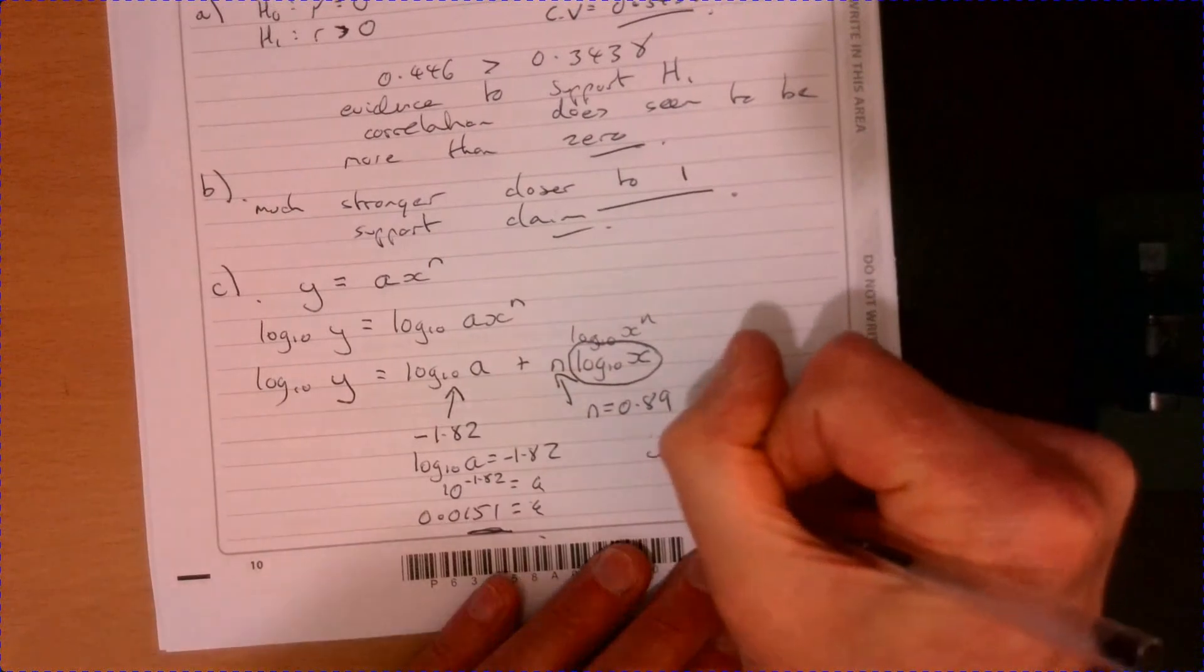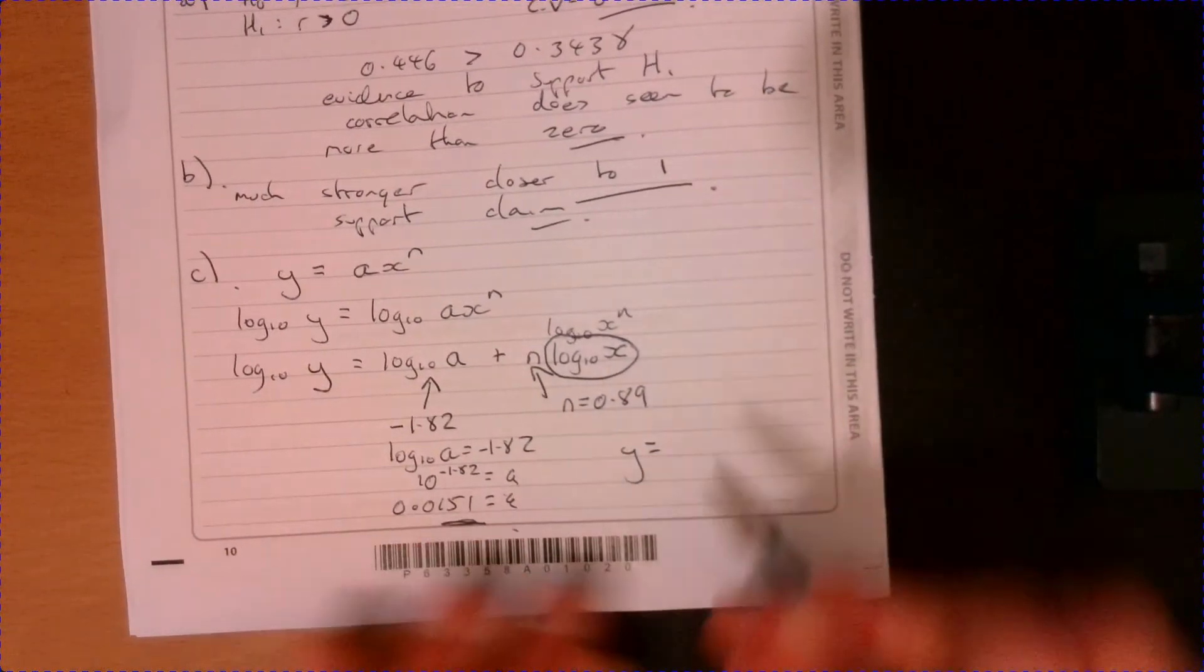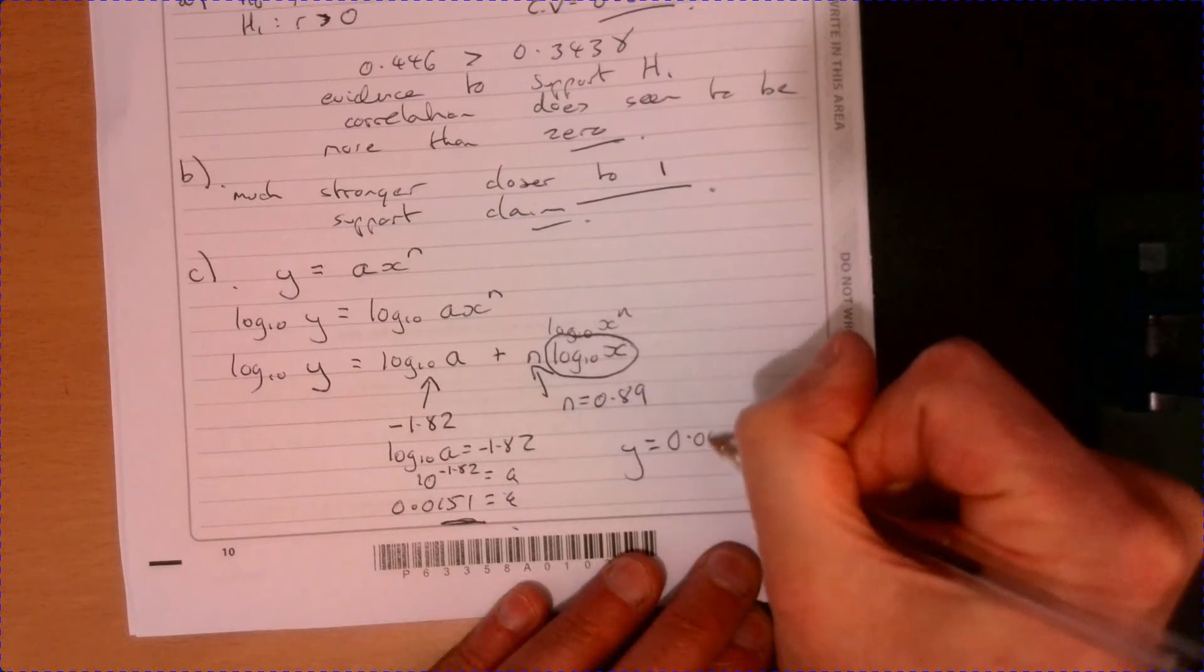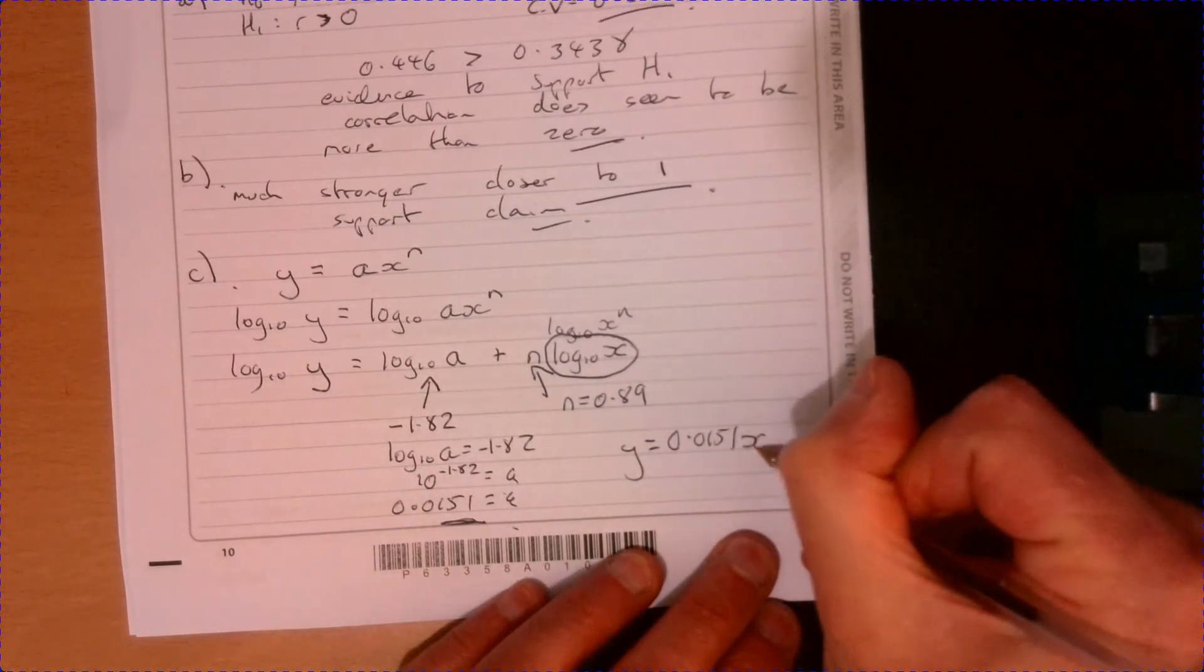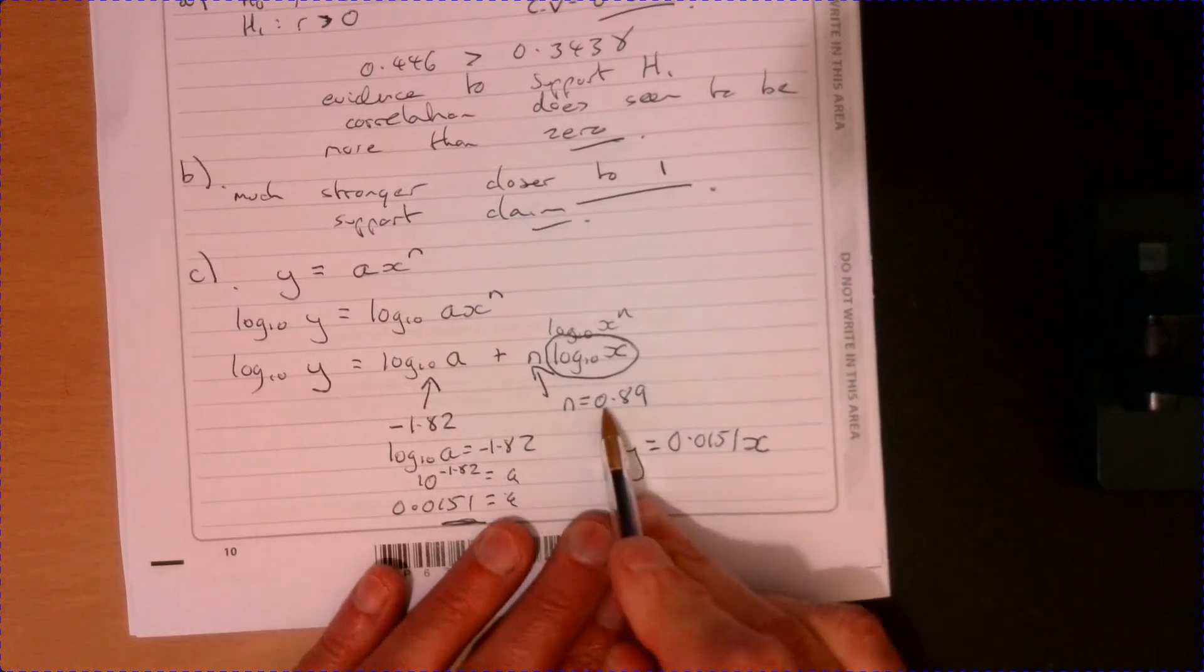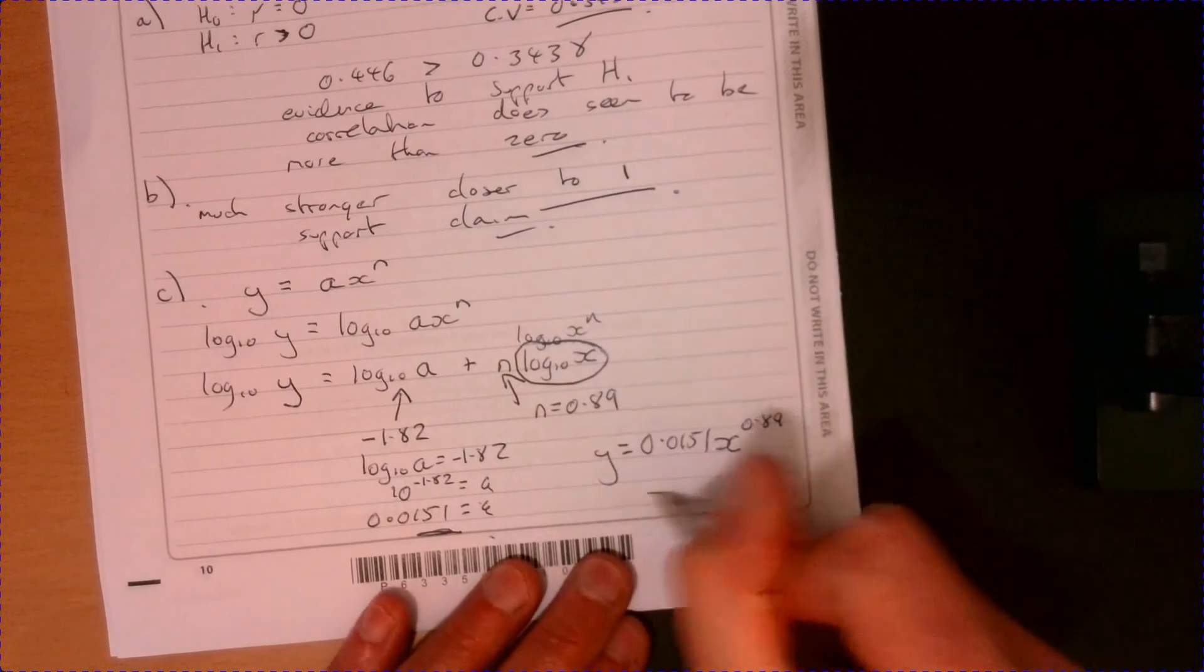So this bit here is N equals 0.89. So if I piece all that together, what have we got? We got Y equals A, 0.0151, and then that's X to the power of this part, 0.89.